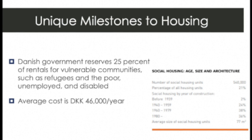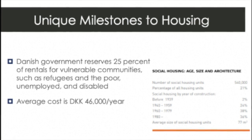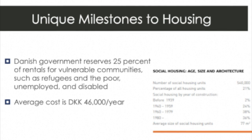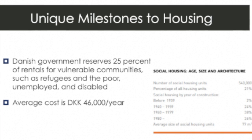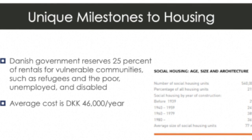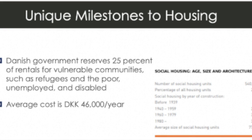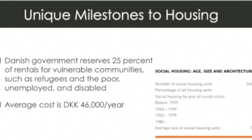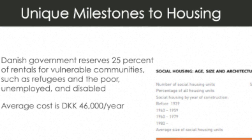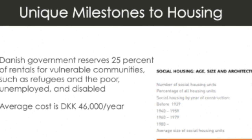This is from my research about Denmark. One unique milestone in housing is that the Danish government does reserve 25% of rentals for vulnerable communities such as refugees, people who are considered poor, unemployed, or disabled. The average cost for these would be about 46,000 Danish kroner per year. The ratio of kroner to the American dollar is about seven — one US dollar is seven Danish kroner. It's also interesting to note the number of social housing units in Denmark and the percentage of how this has been increasing since 1939.